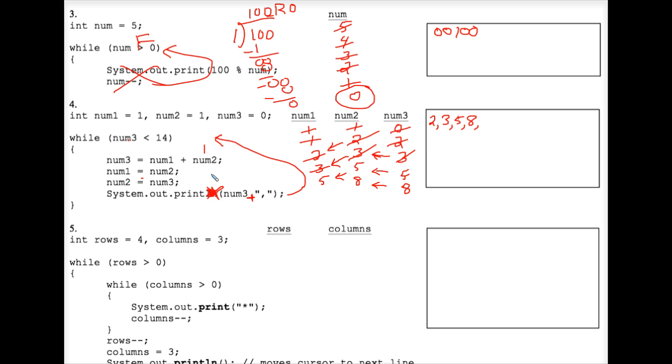I think we're almost finished. Num 1 plus num 2 is 13. We're getting there. Num 2 slides over. Num 3 slides over. It's a nice little pattern. We system out print the 13.